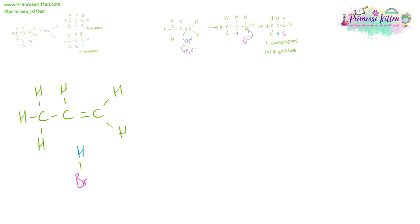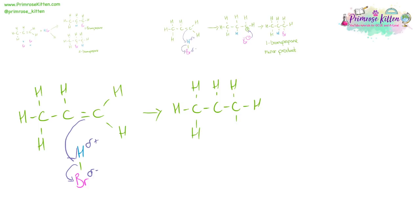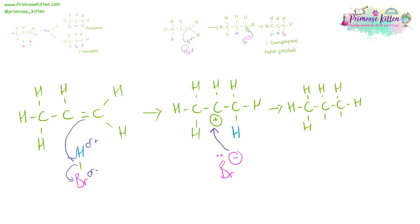The formation of 2-bromopropane, the major product, starts in exactly the same way. We have our dipole set up. The electrons from the double bond come down to the hydrogen, and the electrons from the bond between the hydrogen and the bromine go down towards the bromine. In this circumstance, the hydrogen goes on to that carbon, and we have our bromine again with a negative charge and our carbocation with a positive charge on that middle carbon. The electrons are going to go to that positive charge and we end up with 2-bromopropane. This is the major product.